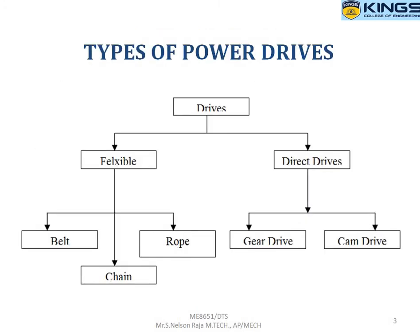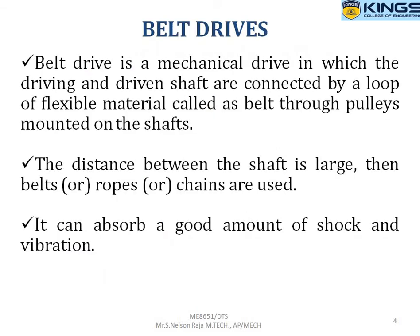Power drives are generally classified into two categories: flexible and direct drive. Direct drive is also called rigid power transmitting device. Belt, chain, and rope fall under flexible power transmitting elements, while gear drive and cam drive come under the direct drive.